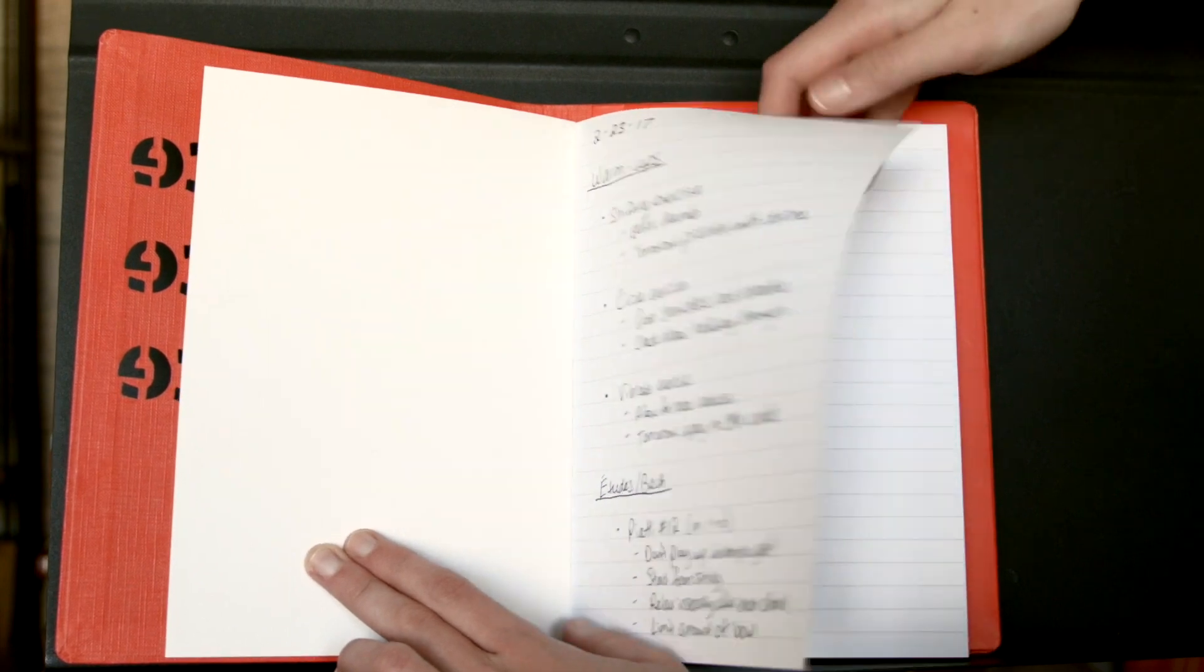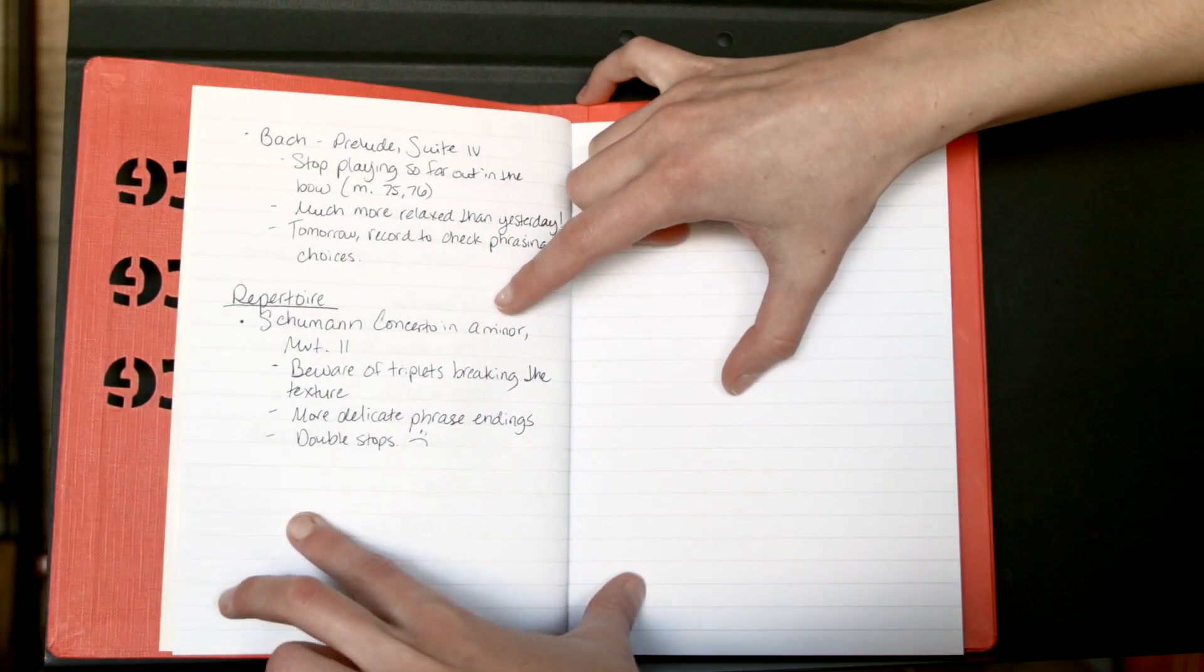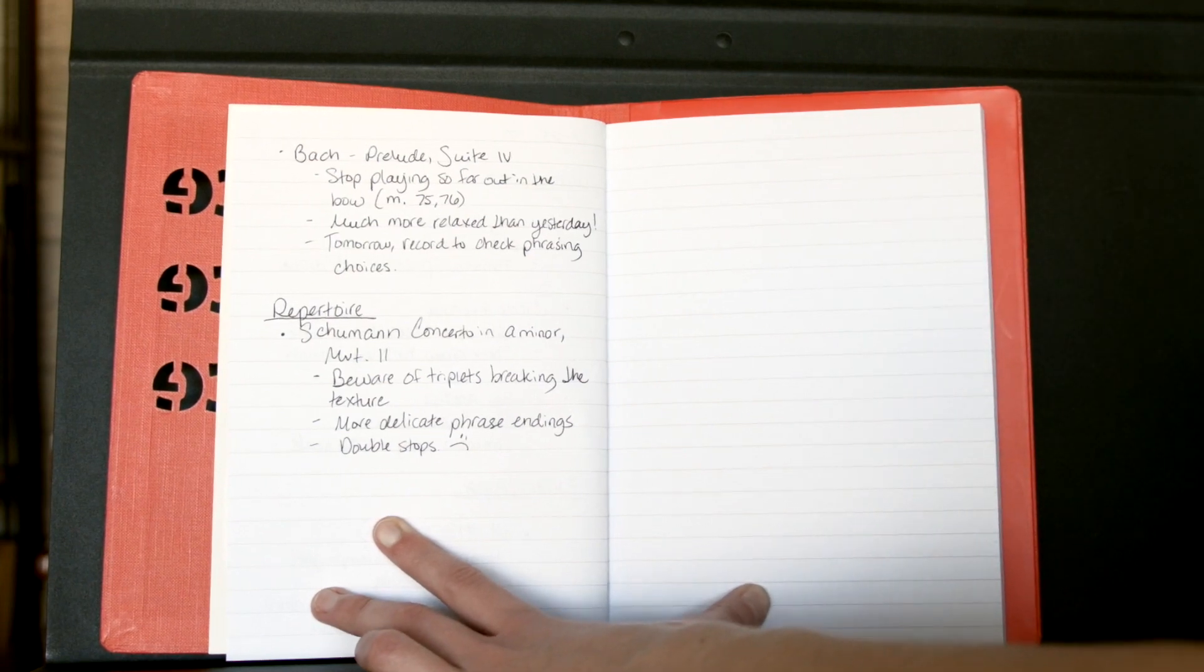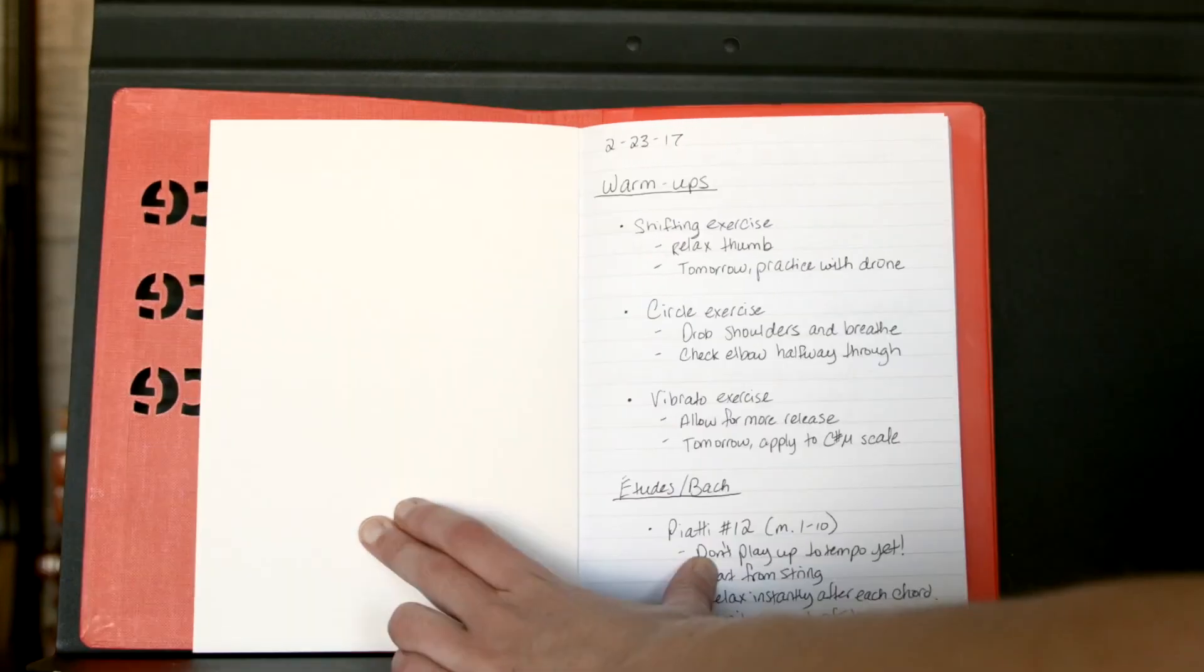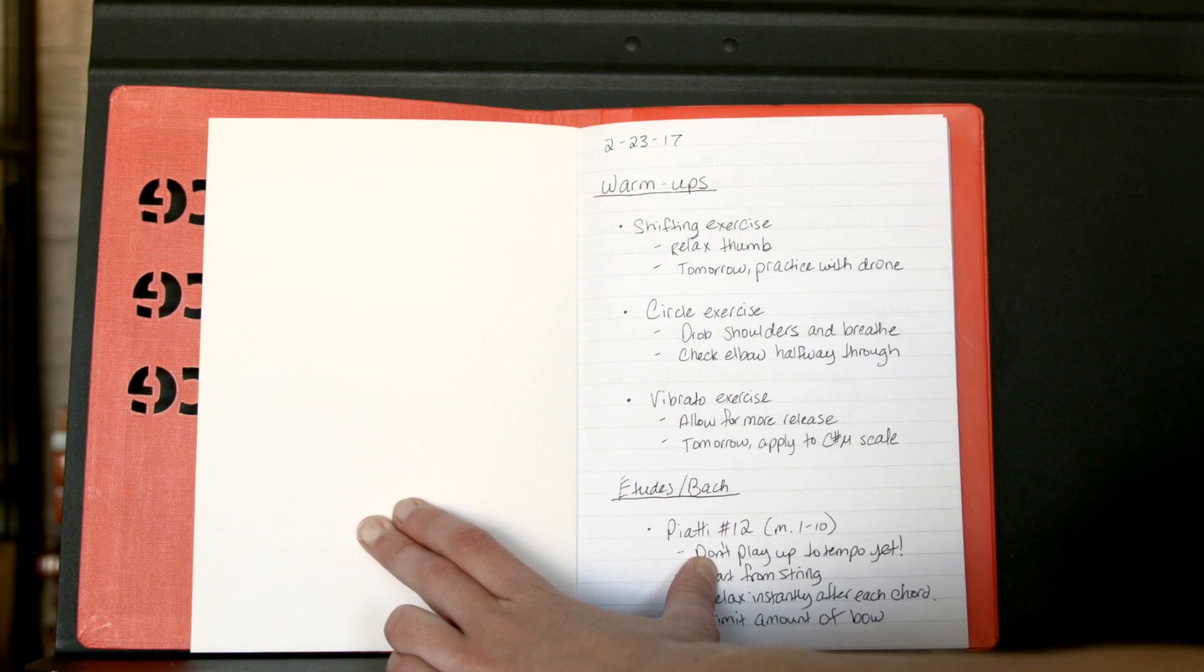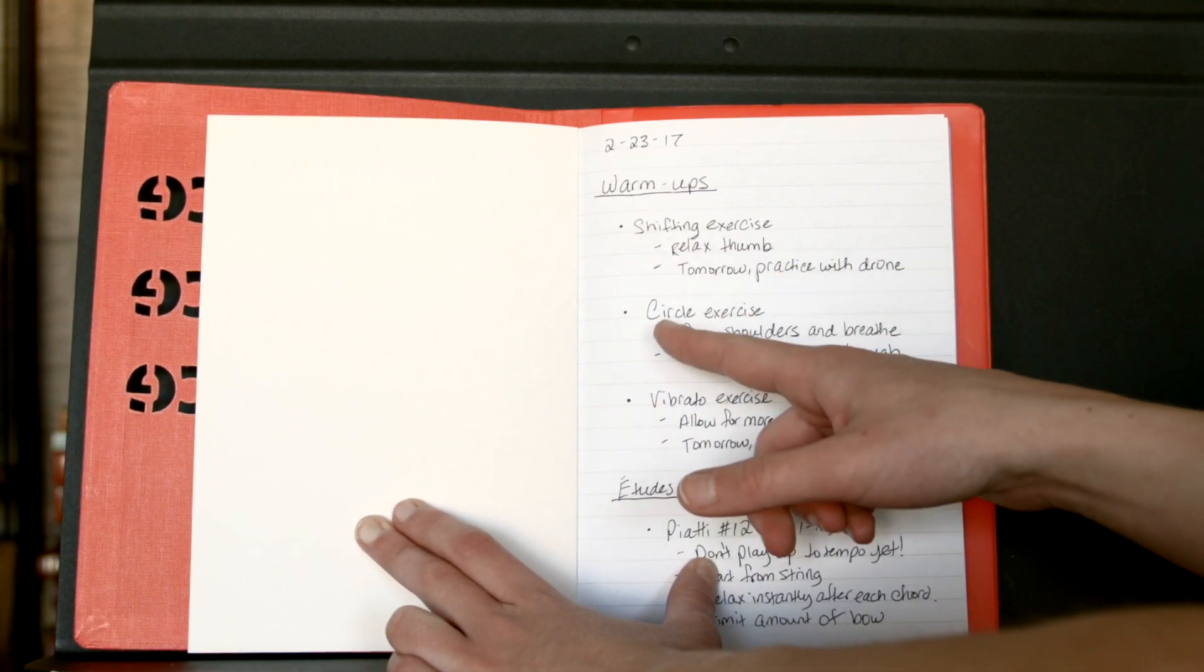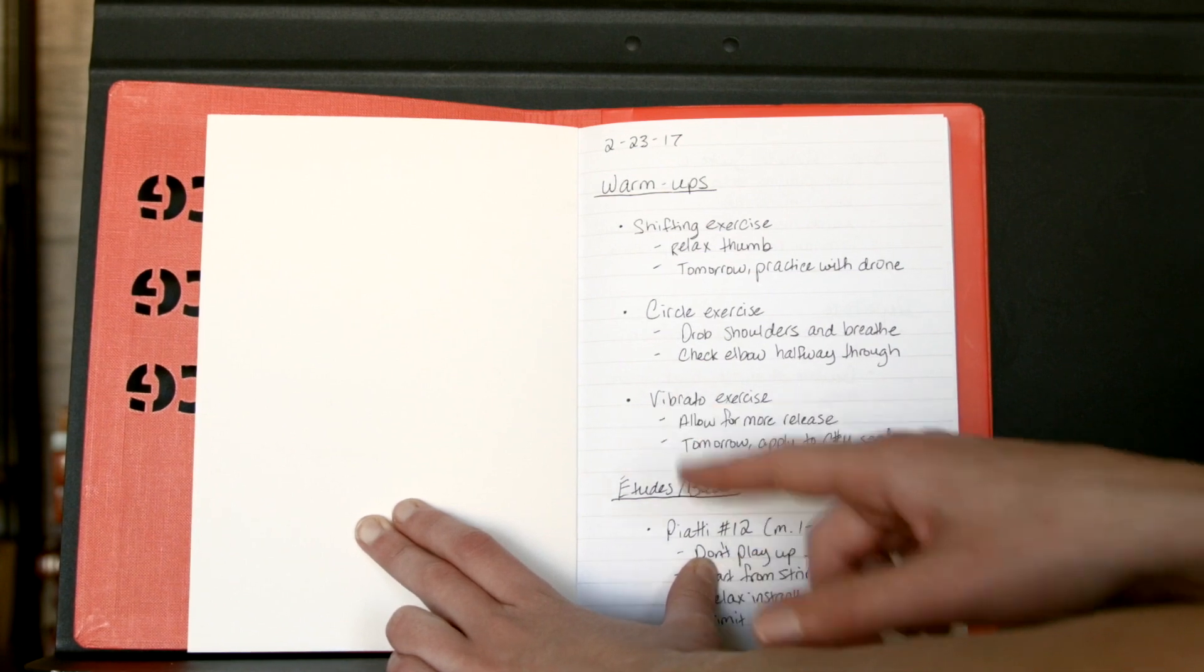I am working on more pieces than just the Schumann, but I didn't really bother writing anything else about those other pieces. So underneath warm-ups, I write down every exercise that I do that day. For example, today was my shifting exercise, my circle exercise, and my vibrato exercise. Now under each of these I write my notes.